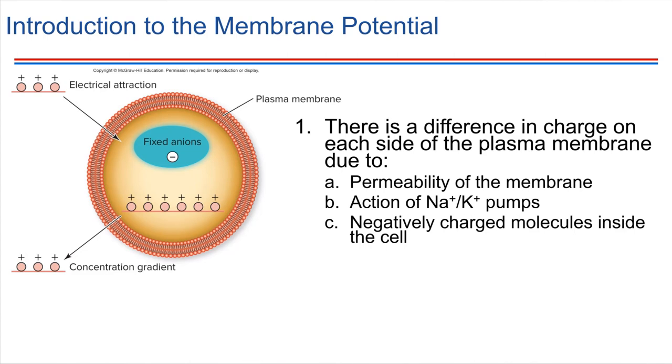For example, DNA. DNA is housed, of course, inside of the nucleus. And remember the structure of DNA. It's got all those negatively charged phosphate groups attached to it. So there tends to be an accumulation of negative charges inside of the cell, for example, DNA.